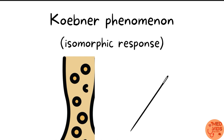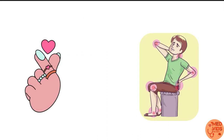This test is called the Grattage test. In people with psoriasis, where you scratch with a nail along the lines of scratch, new psoriatic lesions are found to be developing. This is called the Koebner phenomenon, which is also known as the isomorphic response.